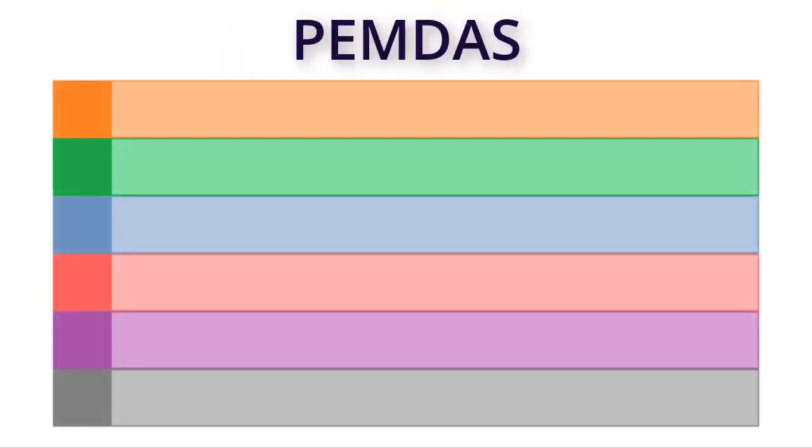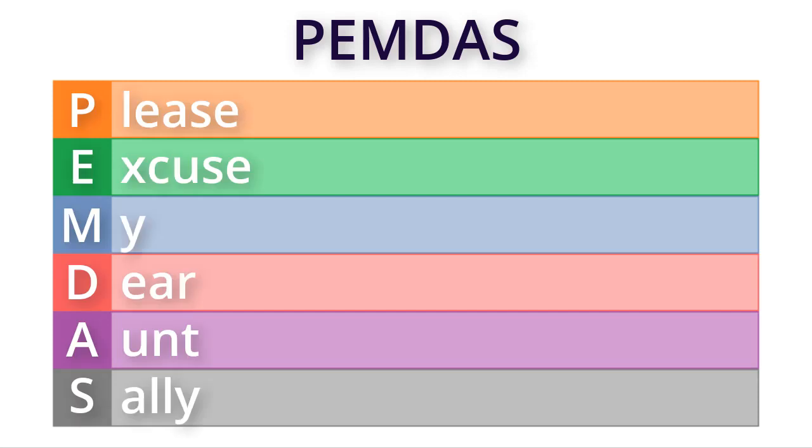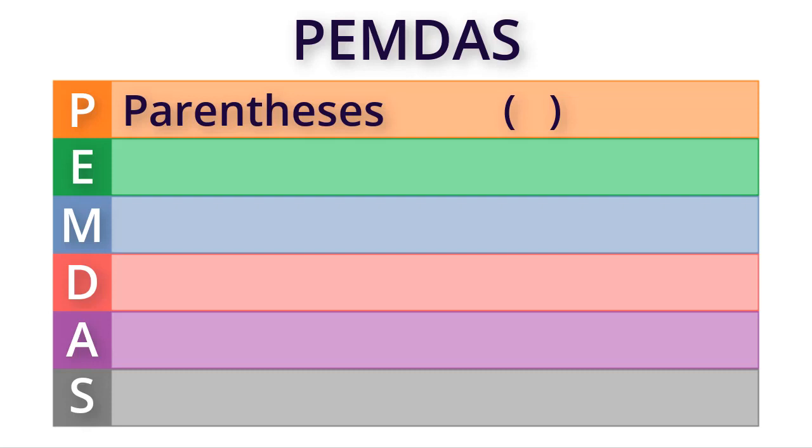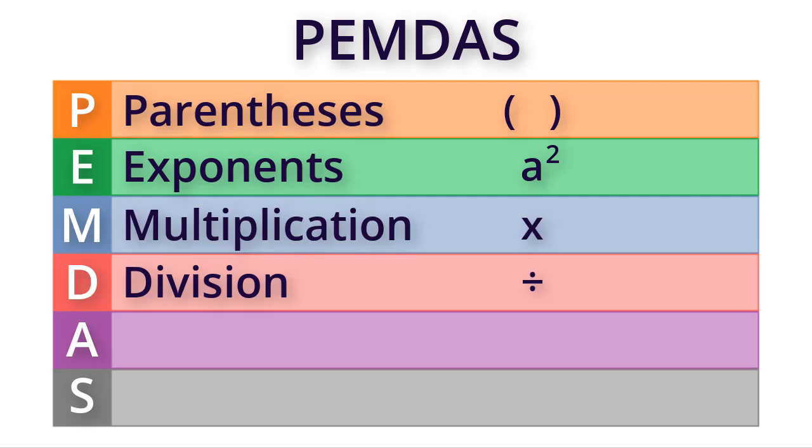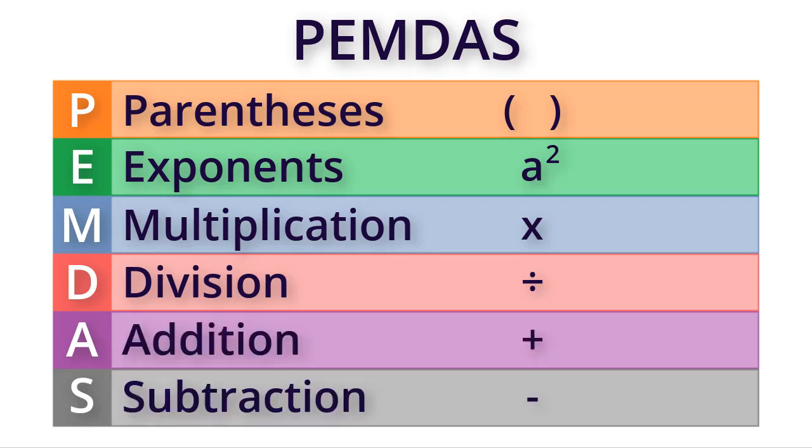As an aid in remembering the steps, you may use this sentence: Please Excuse My Dear Aunt Sally. P stands for parentheses - first do what is inside the parentheses. E stands for exponents or roots - second calculate the powers and roots. M and D stand for multiplication and division - third do all the multiplications and or divisions beginning at the left and working to the right. A and S stand for addition and subtraction - fourth do all the additions and or subtractions beginning at the left and working to the right.